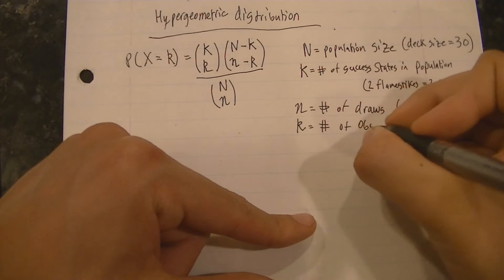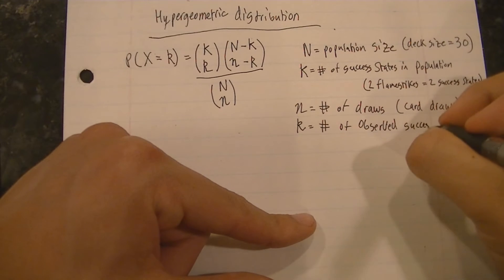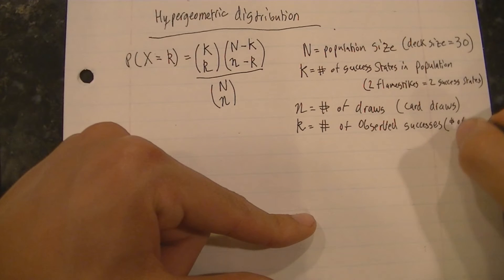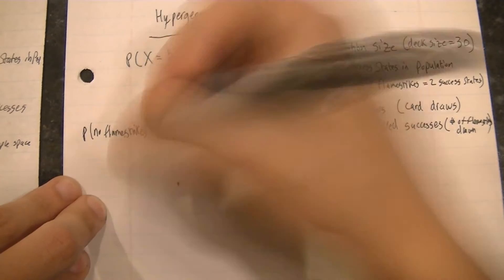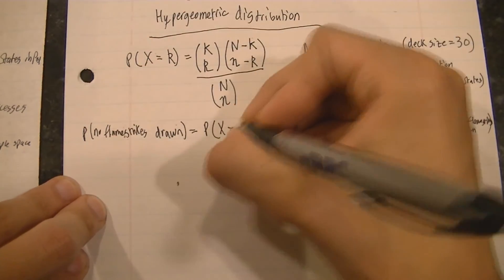And lowercase k is the value that we set our random variable equal to, and that is the number of observed successes after drawing 11 cards. And for our case we are setting lowercase k equal to zero because we are looking for zero flamestrikes drawn after 11 cards.